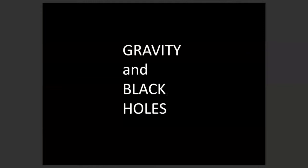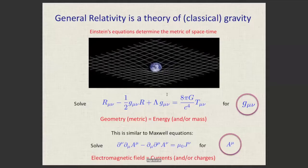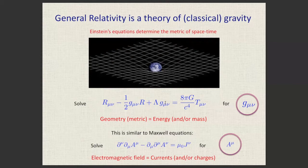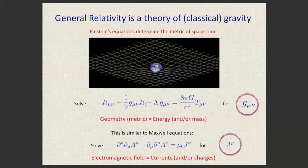Now let us turn to gravity and black holes. General relativity is a classical theory of gravity. Einstein's equations determine the metric of spacetime: given the distribution of mass and energy encoded in the energy-momentum tensor on the right-hand side, you solve for the geometry of spacetime on the left-hand side — analogous to how Maxwell's equations give electric and magnetic fields from charge and current distributions.